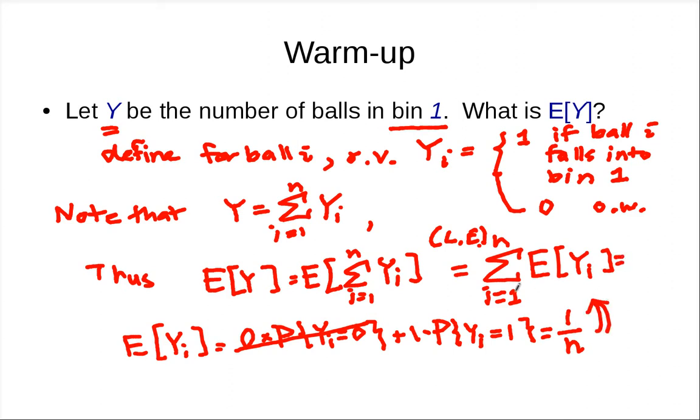Now we put it in here. So this is, there are n guys, and each of these is 1 over n. And this is 1. So the expected number of balls in bin 1 is just 1.